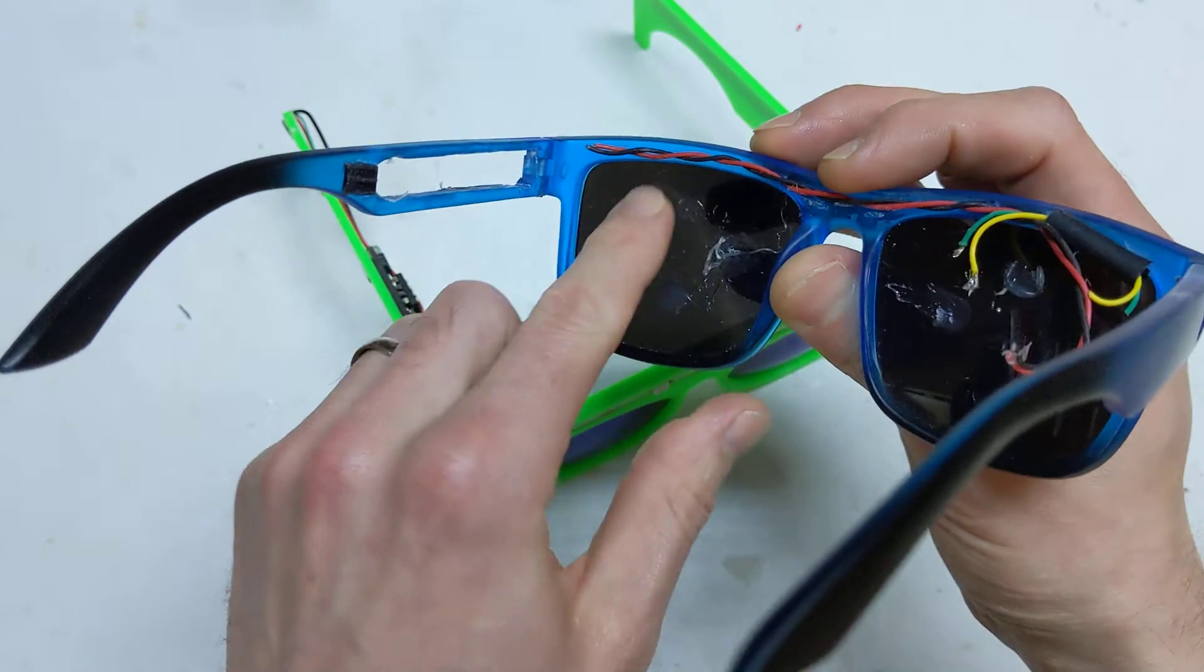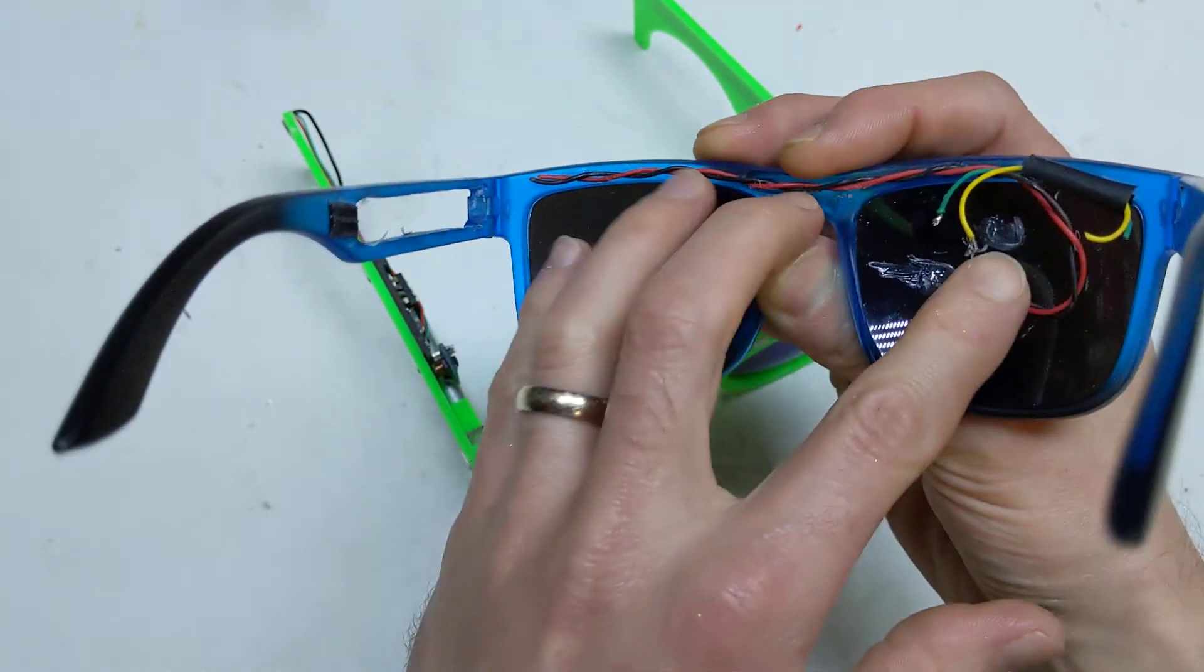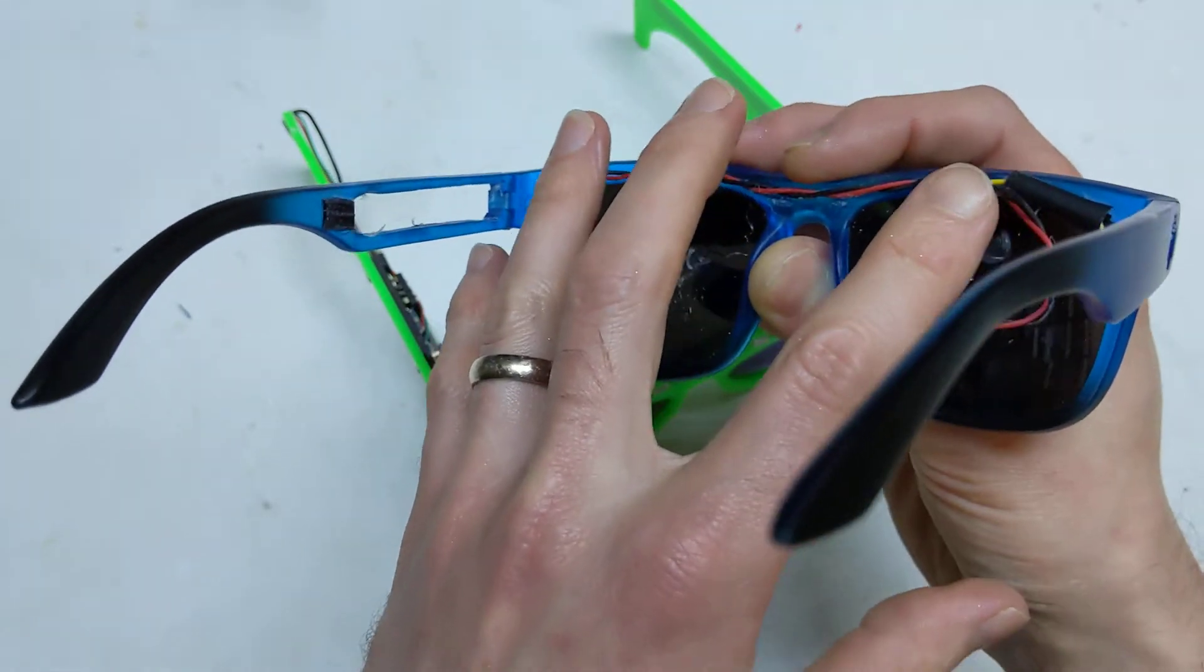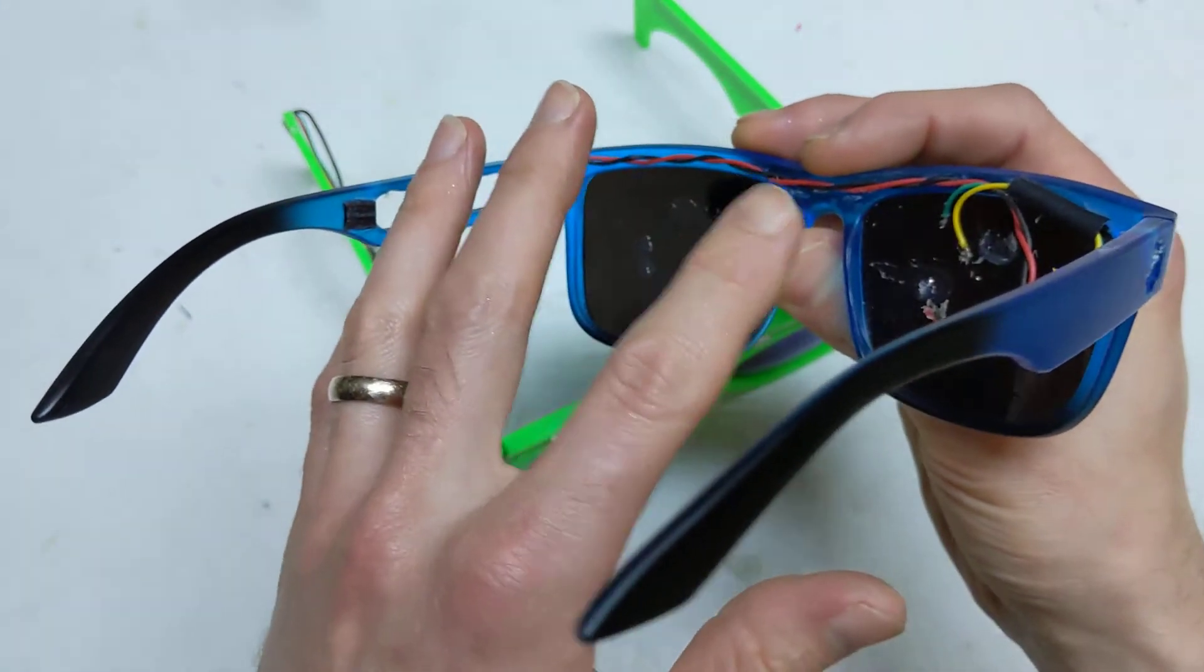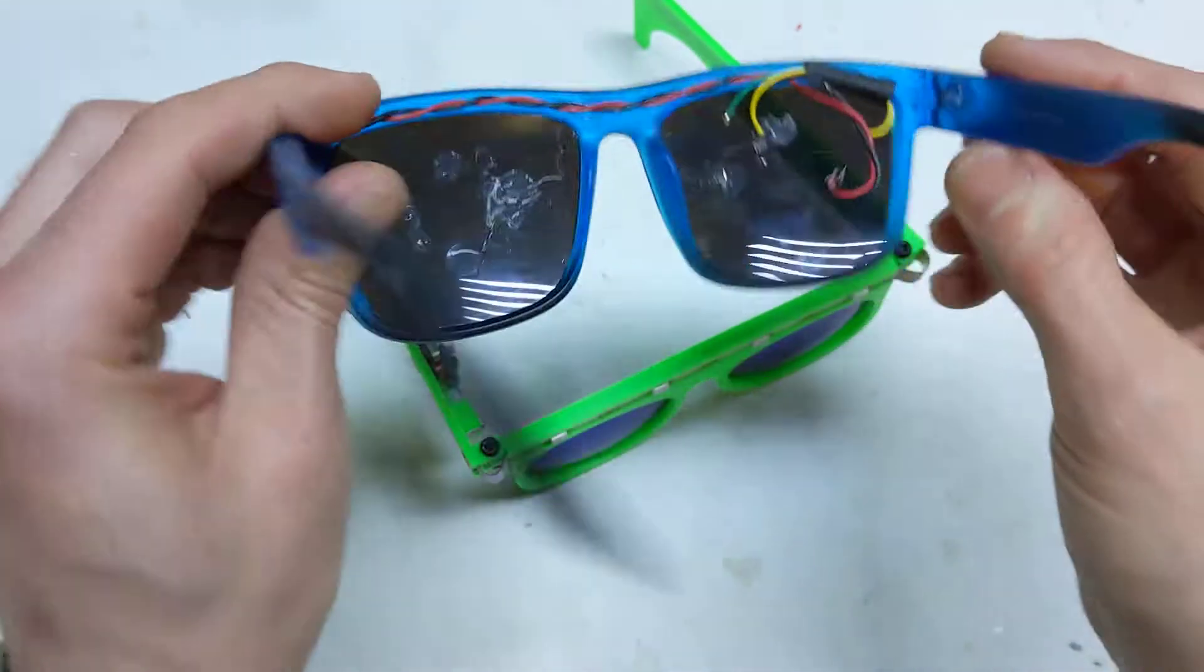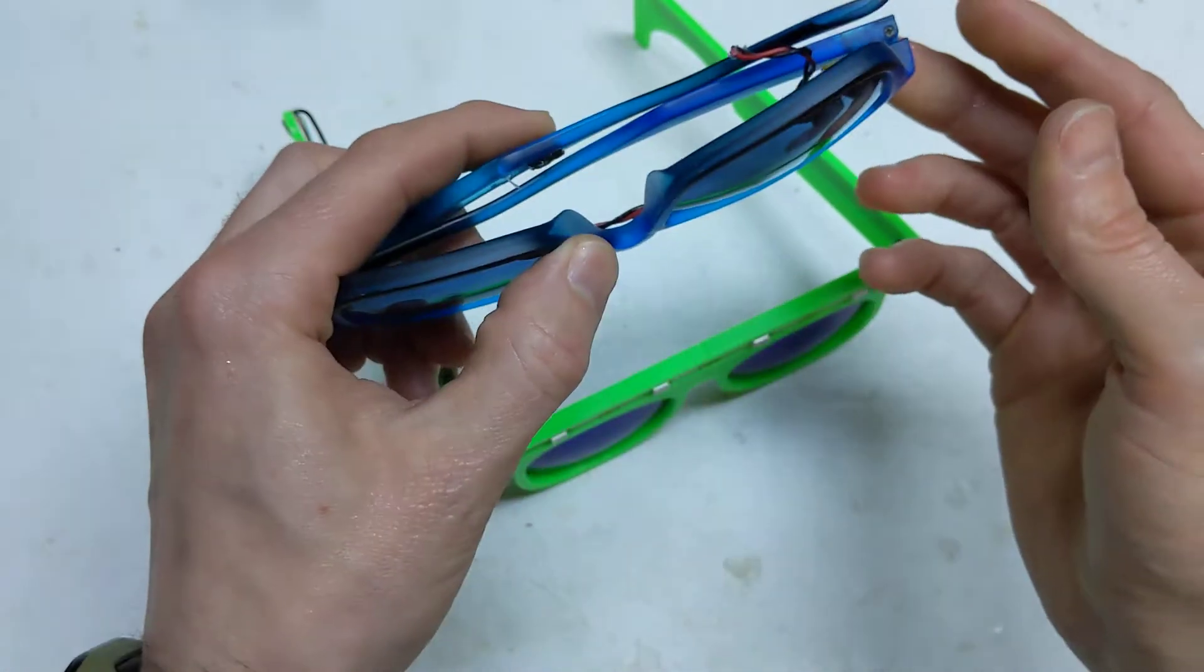It was basically two rings of WS2012 in the front, which was ridiculous, but it was a proof of concept to see if I could actually fit electronics in a pair of sunglasses. You can see where the battery went here and then the electronics over the side.